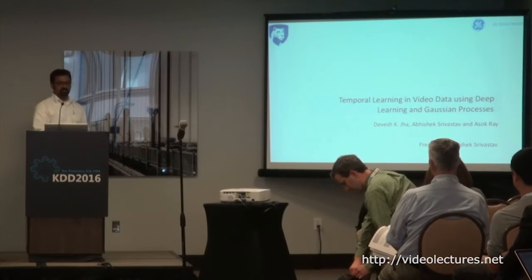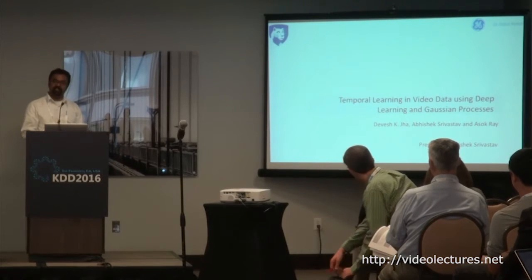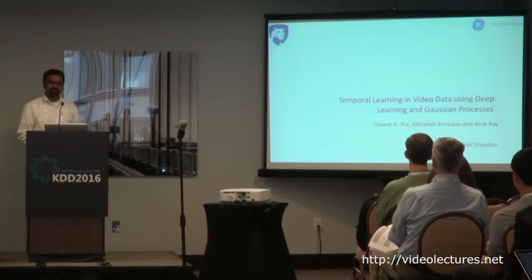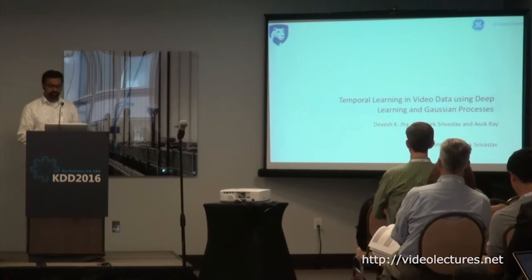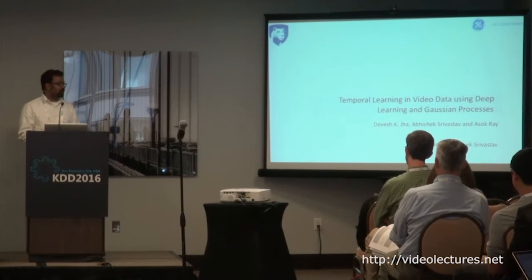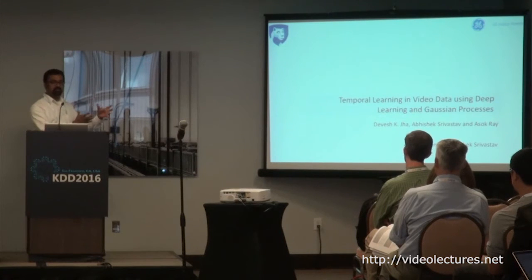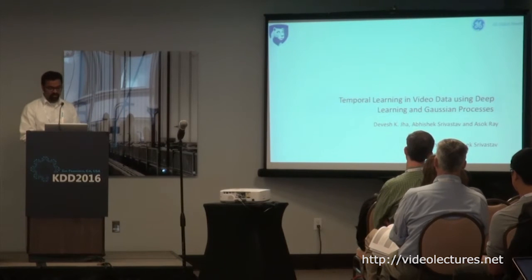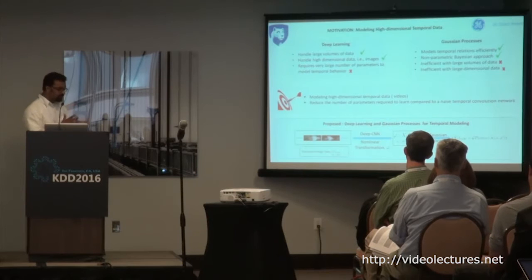The lead author of this paper is Devesh Jha, who is not here today because he is defending his thesis, so I think we can all agree that it's okay that he's not here. I'm also a co-author and I'll be presenting. This paper is basically about how we can do temporal learning using deep learning and Gaussian processes put together — using deep learning as a feature extractor tool and then building models on top of it.